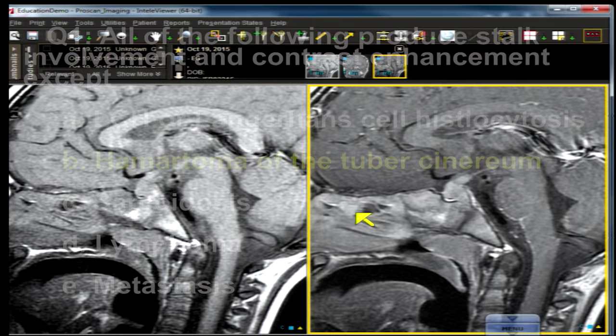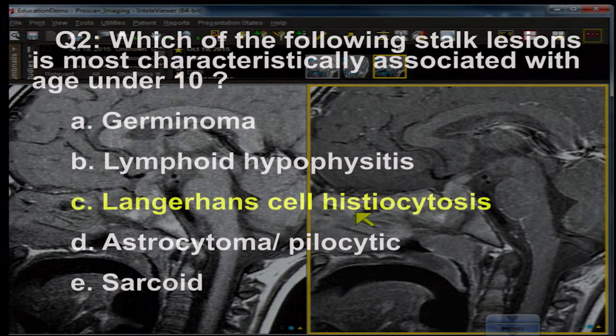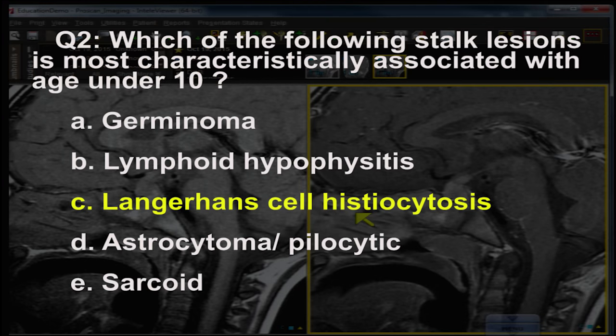Question number two: which stalk lesion is most characteristically associated with age under 10? It's not germinoma — that is not a characteristic stalk lesion, and typically germinomas occur in boys and young men in the pineal region. Lymphoid hypophysitis is associated with pregnant women. Langerhans cell histiocytosis is the correct answer.